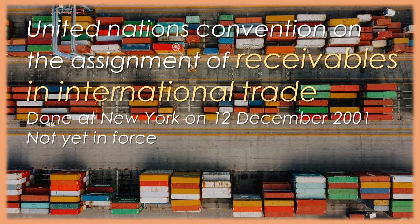b. Unless otherwise agreed, an assignment of one or more future receivables is effective without a new act of transfer being required to assign each receivable. Except as provided in paragraph 1 of this article, Article 9 and Article 10, paragraphs 2 and 3, this convention does not affect any limitations on assignments arising from law. Article 9. Contractual limitations on assignments. 1. An assignment of a receivable is effective notwithstanding any agreement between the initial or any subsequent assigner and the debtor or any subsequent assignee limiting in any way the assigner's right to assign its receivables.